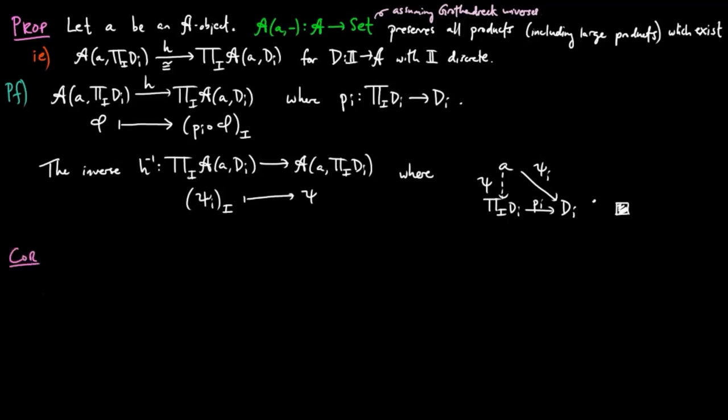Then as a corollary, we have for a small category A the following are equivalent. One, A has products and two, A is a complete lattice. In other words, it is a complete and co-complete thin category. Thin meaning that between any two objects there exists at most one morphism between them.